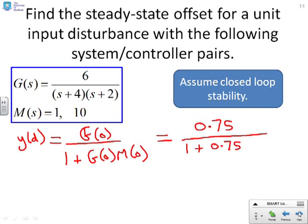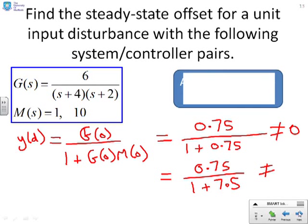If M of 0 was 10, I'd get 0.75 over 1 plus 7.5. So you notice in this case, increasing the size of M reduces the steady-state offset, which is not unsurprising, but clearly not equal to 0.